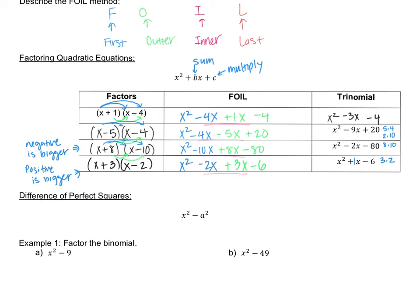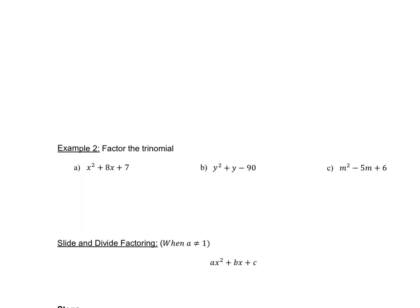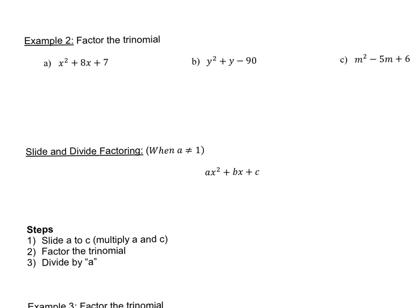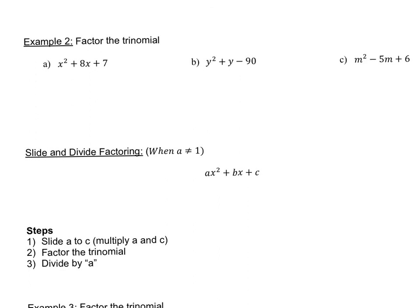Let's practice factoring trinomials. If we have a trinomial with x squared plus 8x plus 7, we set up two parentheses with x's. The number 7 only has factors 7 and 1. Since all terms are positive, both factors should be positive. To check: 7 times 1 gives 7 — that's c. And 7 plus 1 gives 8 — that's the middle term. So the factors are (x plus 7)(x plus 1). This works.